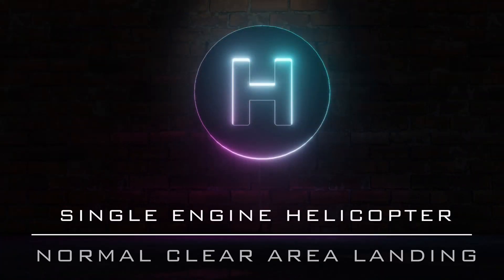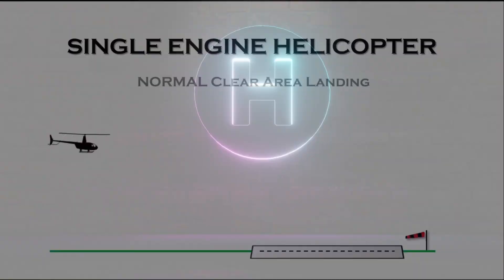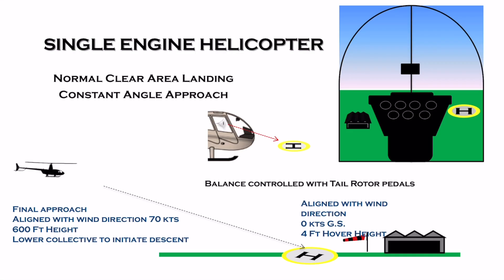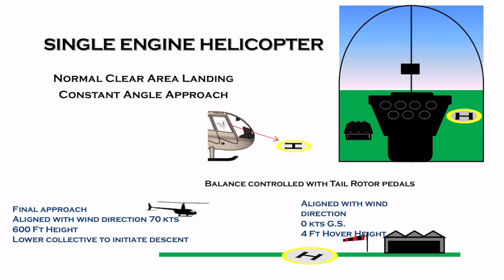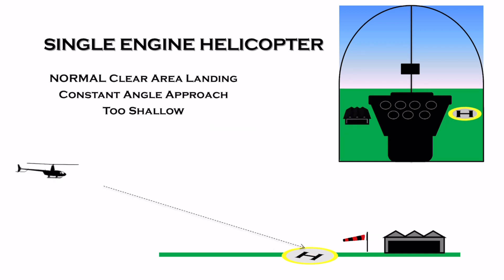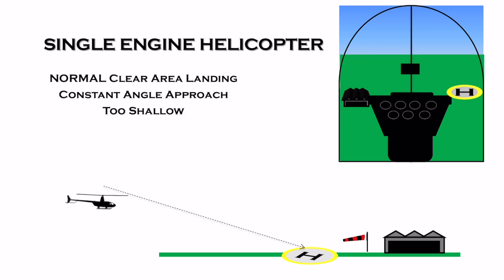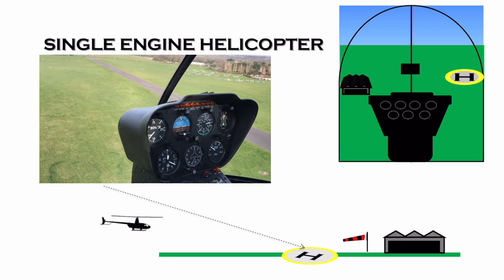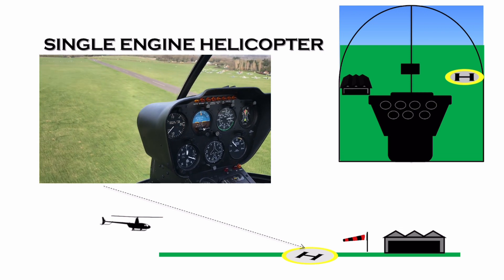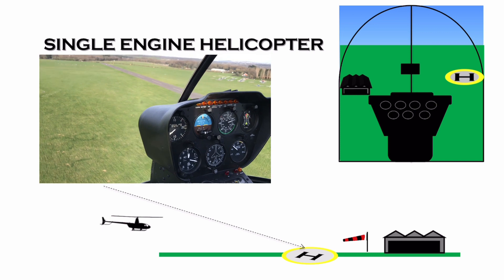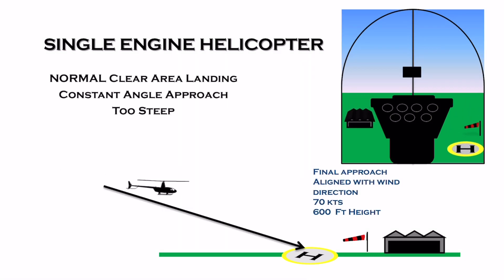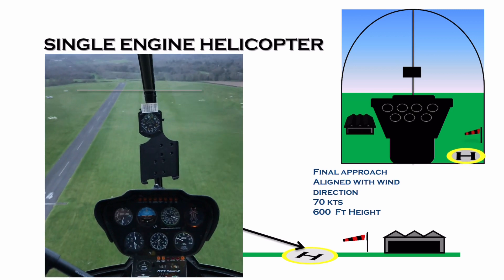This technique involves selecting the correct sight picture of the designated landing spot on the windshield when it comes into view, lowering the collective and then adjusting it up and down to keep the descent angle constant. If the spot moves up the windshield then you're too low on the approach path and need to add collective to reduce the rate of descent. The risk of being too low is that you may potentially be closer to any obstacles underneath the approach path.